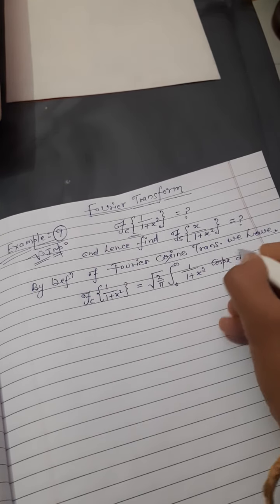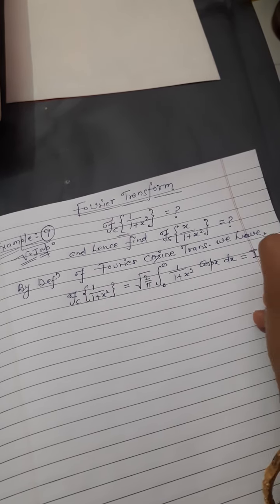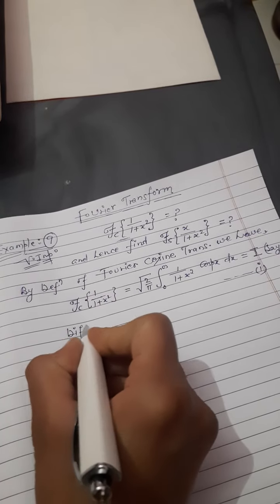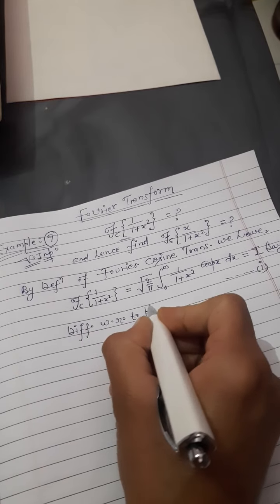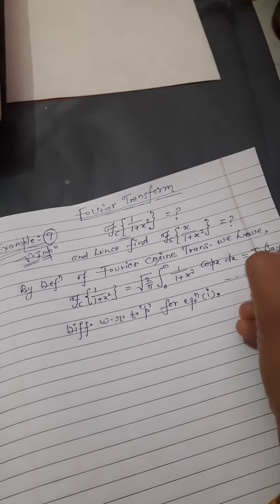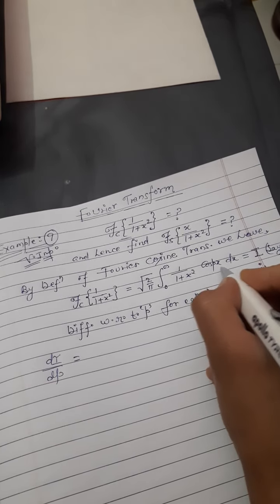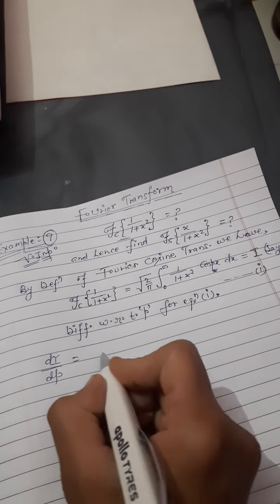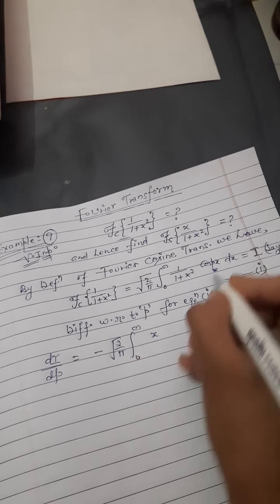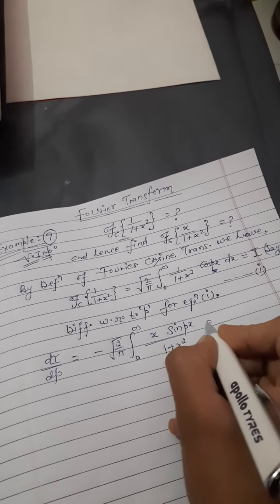Suppose this integral equals I — equation number 1. In the next step, differentiate equation 1 with respect to p. Differentiating I with respect to p gives dI/dp. Differentiating cos(px) gives −sin(px), so we get: minus under root of 2/π, integral from 0 to infinity of x·sin(px)/(1+x²) dx.